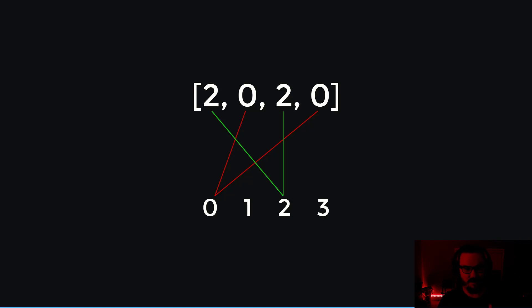Moving forward, we have 1 pointing to a zero, which means there are no ones in here. So there's no lines pointing anywhere because there's no ones.